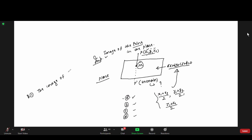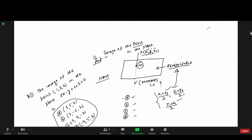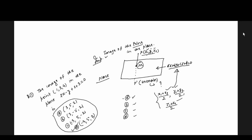A question about point A at (1, 3, 4) — finding the image of a point in the plane with equation 2x minus y plus z plus 3 equal to zero. We have four choices. The answer is correct; the answer is D.